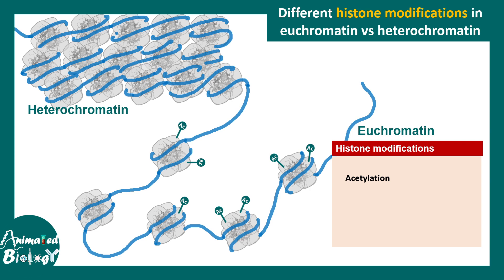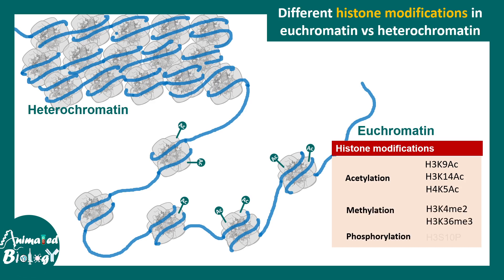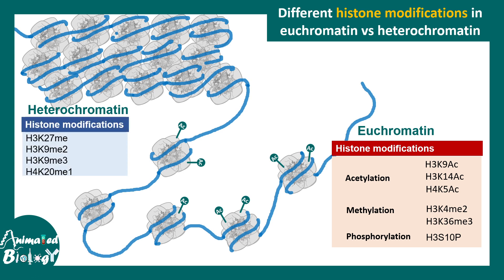Euchromatin is highly acetylated in specific residues like H3K9, H3K14, etc. Also, there are specific methylation and phosphorylation found in this region. In contrast, in heterochromatin, different other modifications in the histone are found.